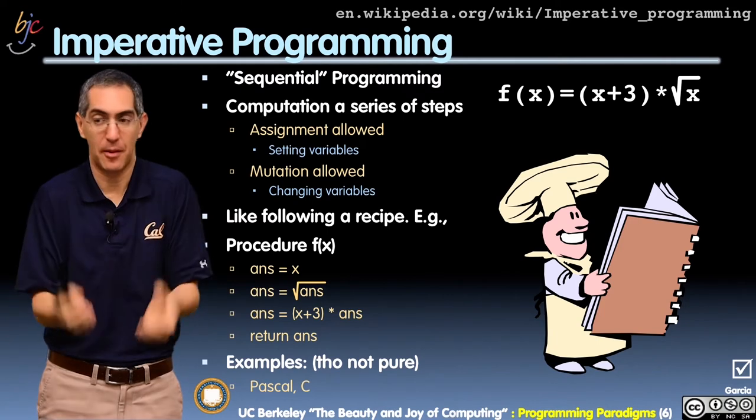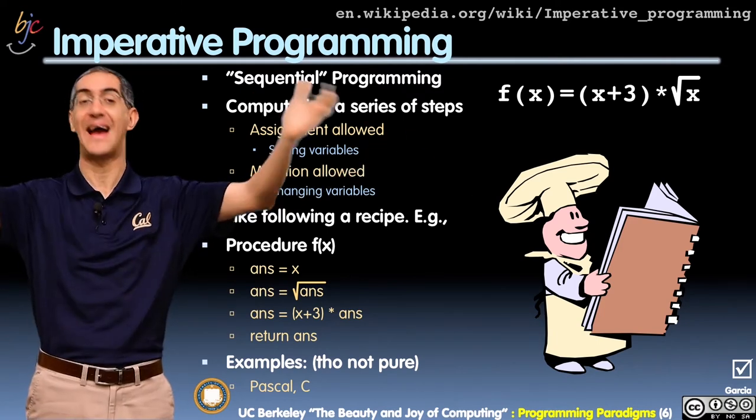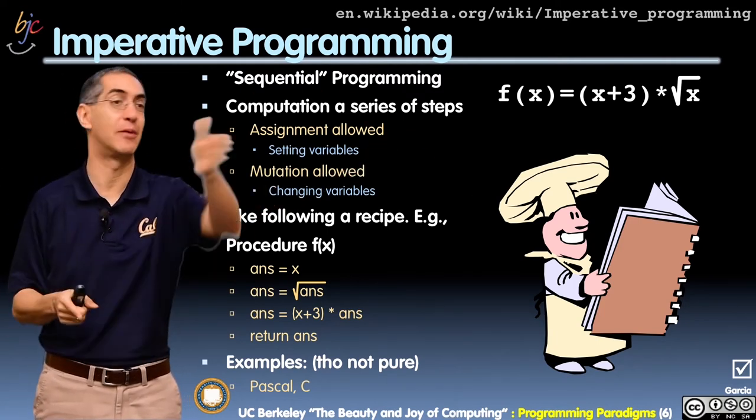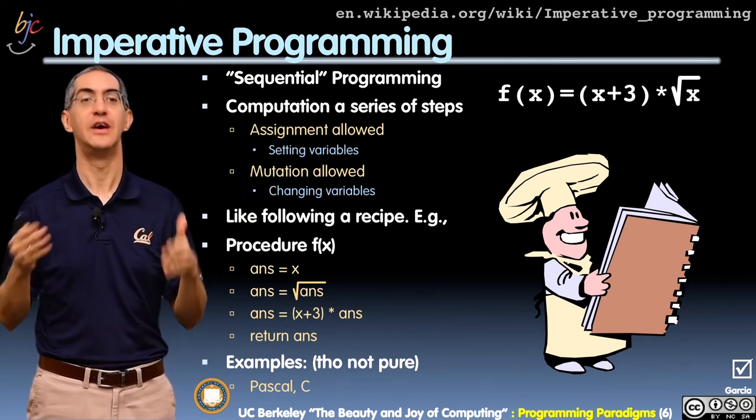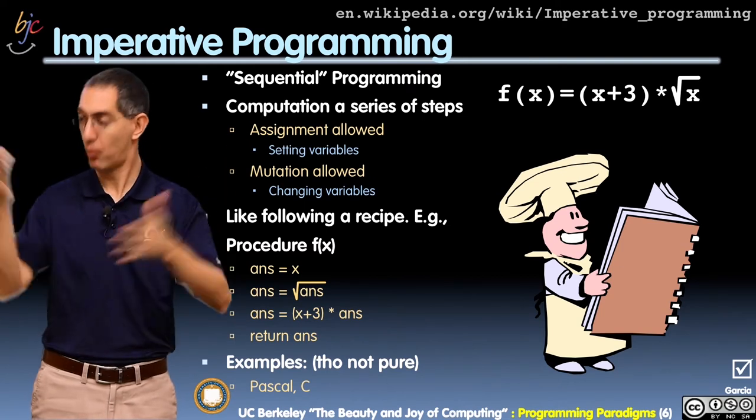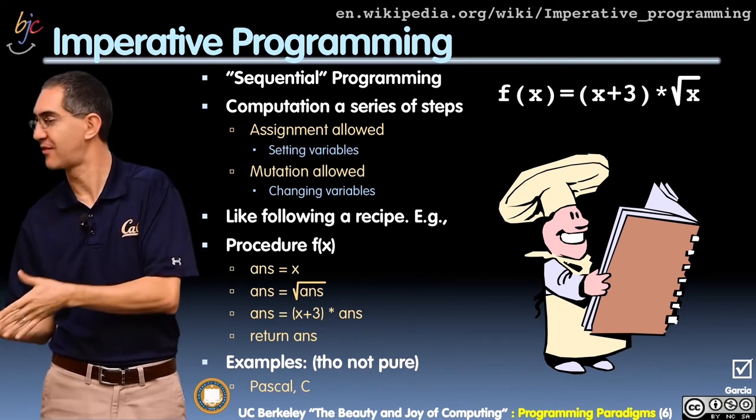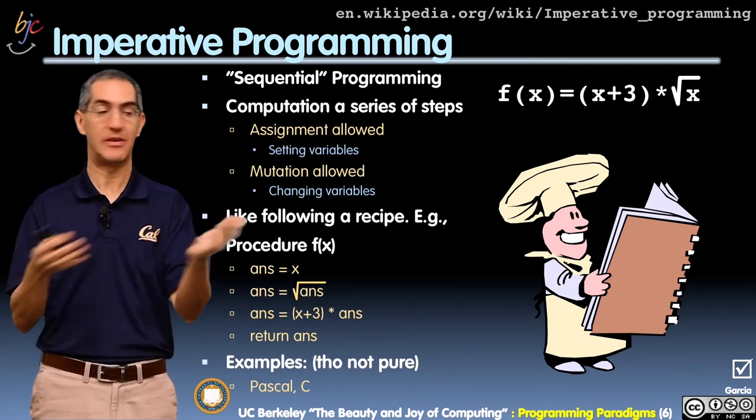When you send computation to many machines, they come back out of order. Because that machine's faster, the network is slow there, the disk is really slow there, that machine's bogged down with computation. So you have to be able to handle work out of order, which is why functional programming is so beautiful—there's no order to those things.